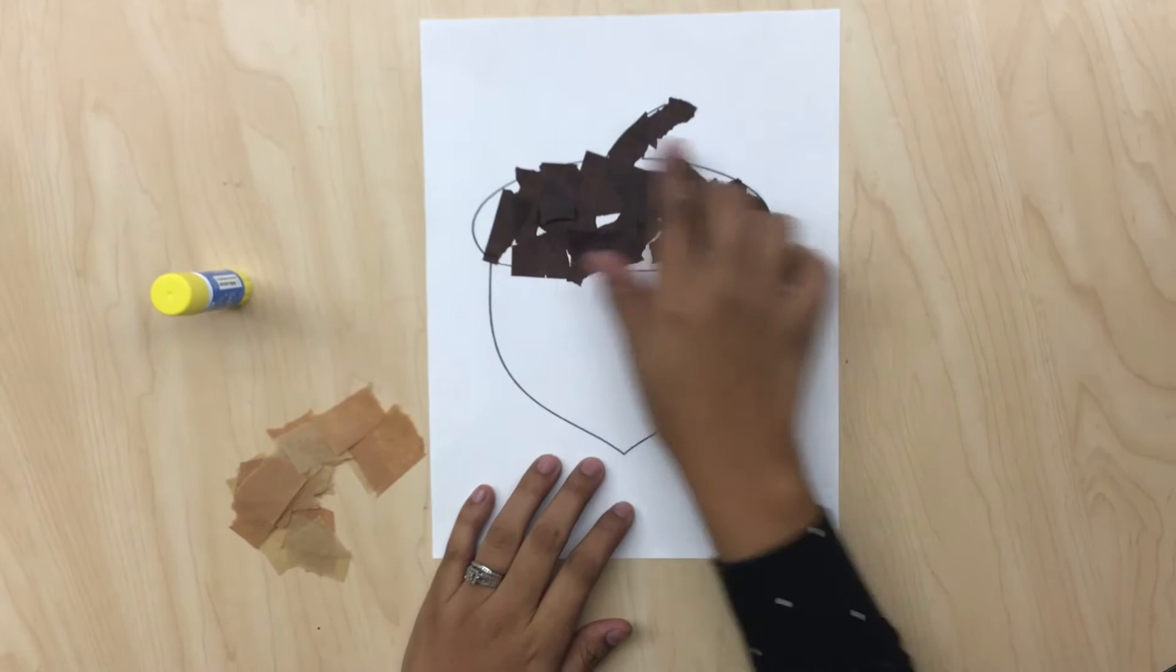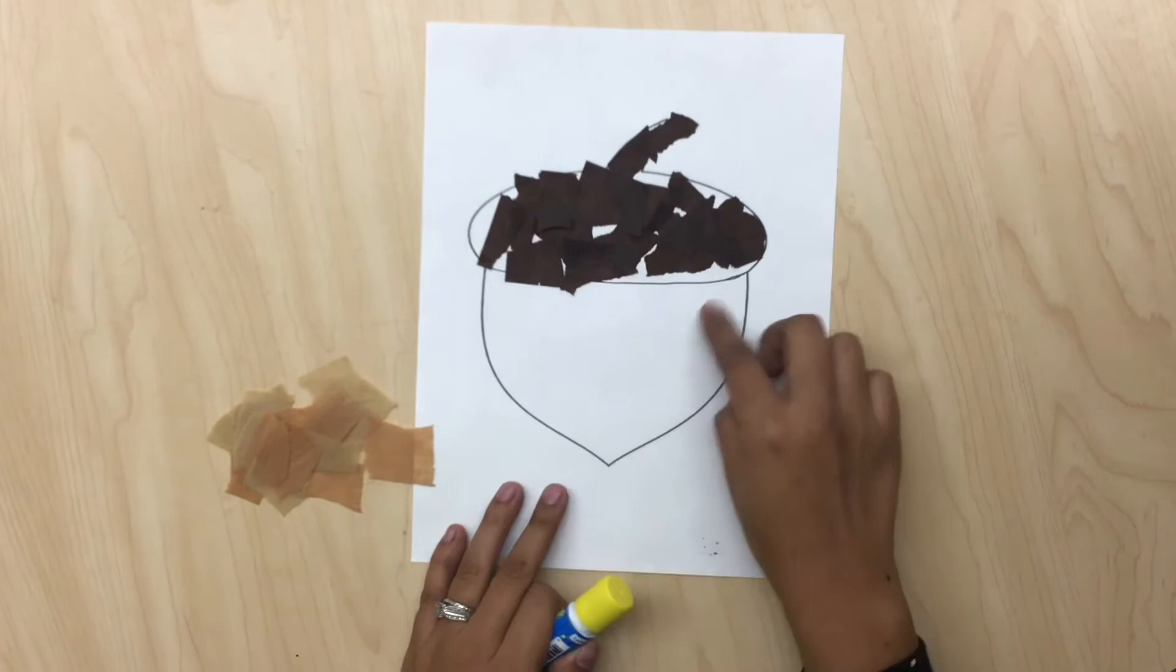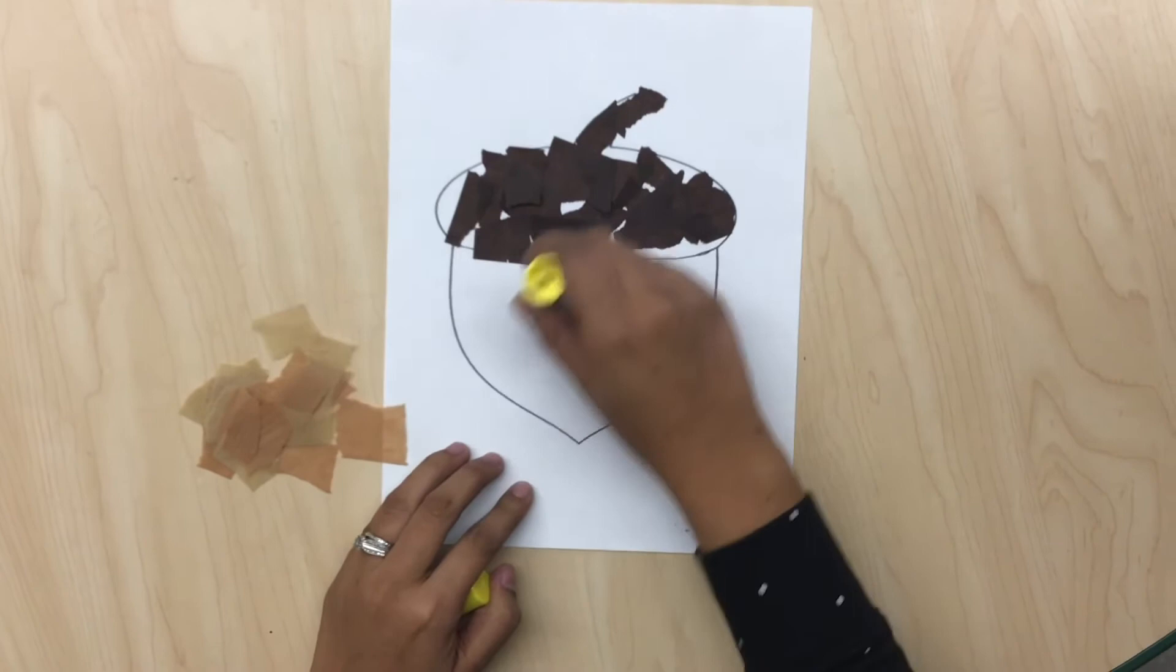Once we're done putting the tissue paper on our stem, we're going to get the light brown tissue paper and we're going to glue them on the bottom part of the acorn.